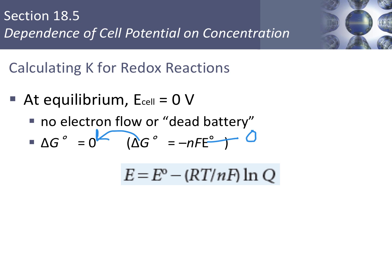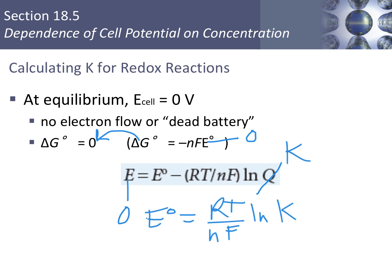Looking at the Nernst equation with cell potential equal to 0 and substituting K for Q (since we're at equilibrium), you get the standard cell potential equal to RT divided by NF times the natural log of K. This equation is not in your reference packet, though you can derive it. We've also discussed a different way to calculate the equilibrium constant from Chapter 17, which we'll review.